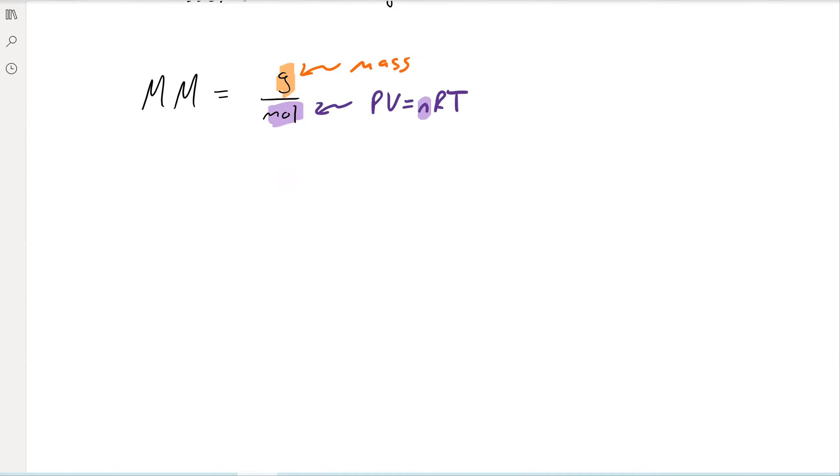Let's check out an example of this. So a 0.272 gram sample of gas has a volume of 0.224 liters at 298 kelvin and 1.06 atmospheres, which diatomic gas is it?